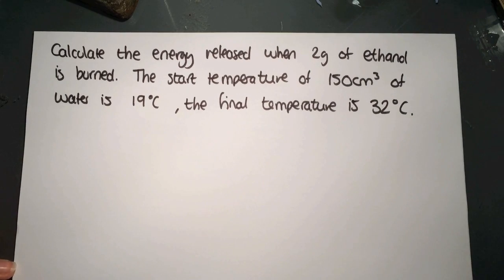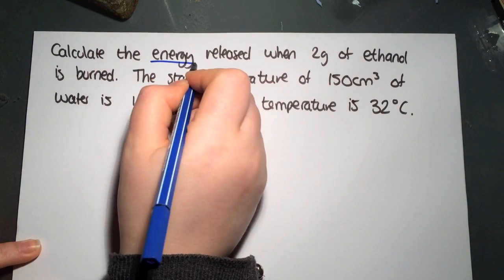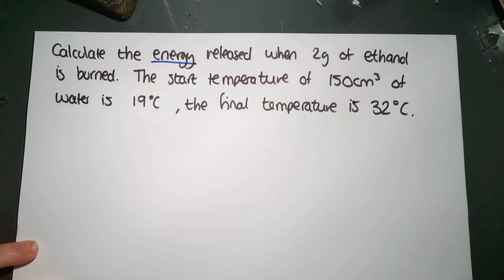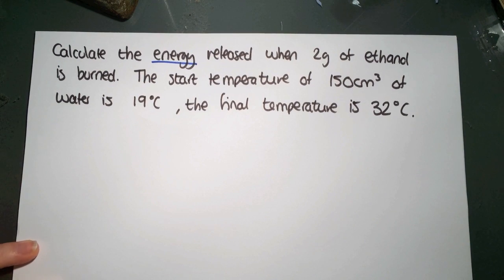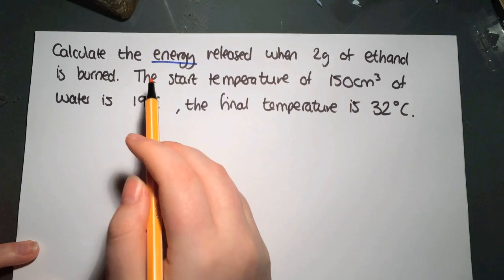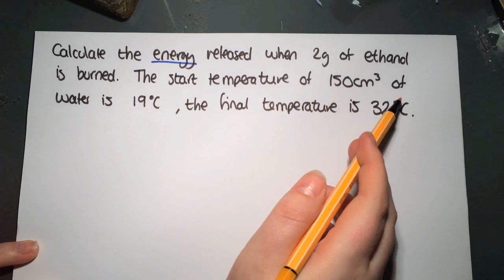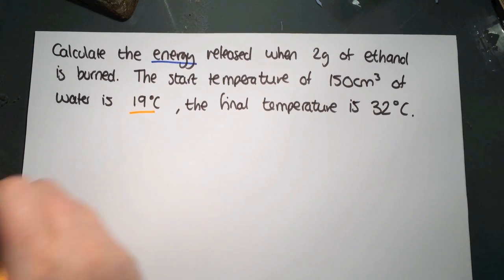We've got our next example here. We're calculating energy again. It says released when 2 grams of ethanol is burned. So we completely ignore that value. We're looking purely for water.